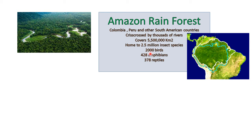Here is some information about the Amazon Rainforest. It is located in South American countries including Colombia, Peru, and others. It is crisscrossed by thousands of rivers. It is home to 2.5 million insect species, 2,000 birds, 428 amphibians, and 378 reptiles. You can find more information if you need.